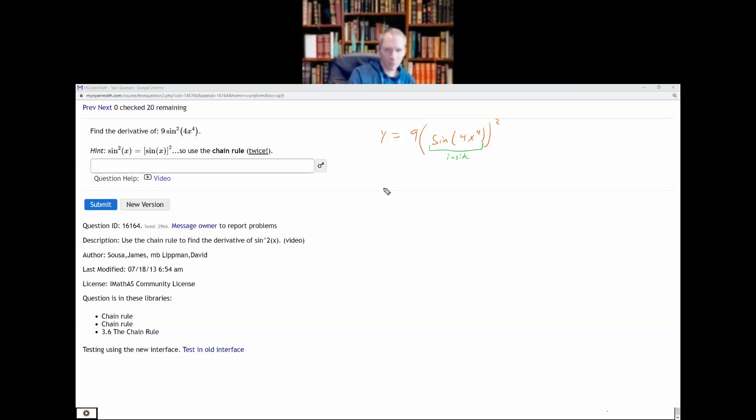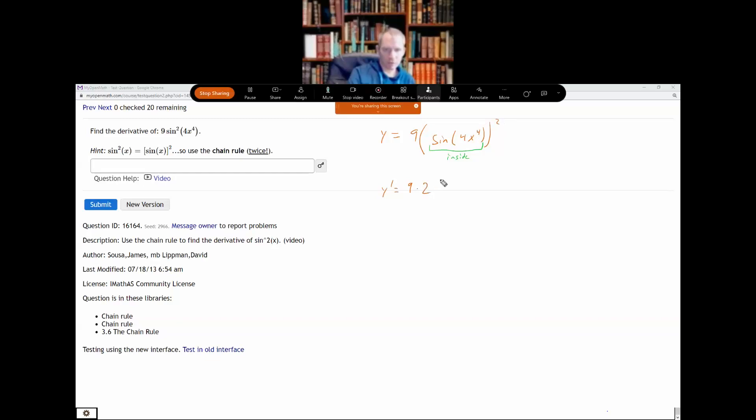Okay so when I differentiate, a constant multiple hangs out, my outside function is stuff squared so its derivative is 2 times that stuff to the power of 1. Chain rule says leave the inside alone so we have sine of 4x to the fourth and then the chain rule says multiply by the derivative of the inside function.